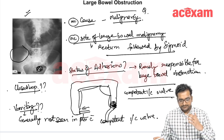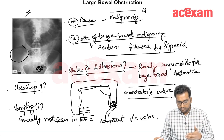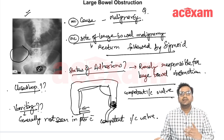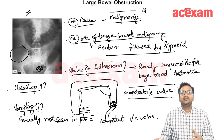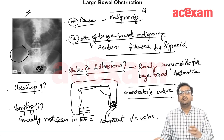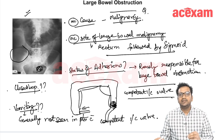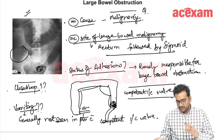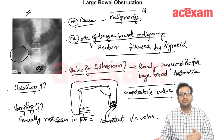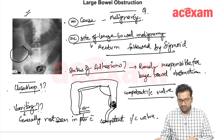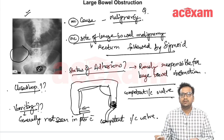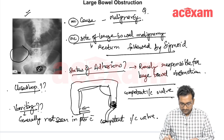The clinical features of large bowel obstruction are: abdominal distension, inability to pass flatus or feces — that is obstipation — and abdominal colics. However, vomiting is generally not seen, or is seen only in patients with an incompetent IC valve.